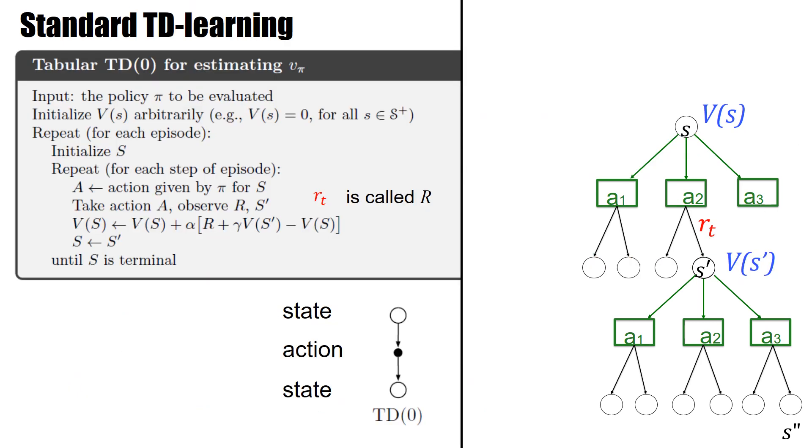Now, with this in mind, we can now write down an algorithm that compares the V values and updates these across different time steps, neighboring time steps, neighboring states. And it would look like this. The V value up here, V of S, should be explainable by the reward you get in the next time step and the V value down here.